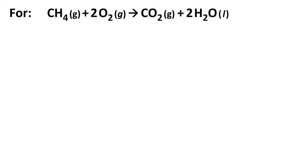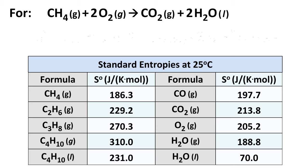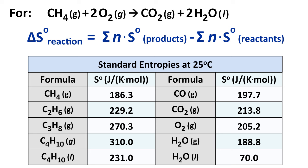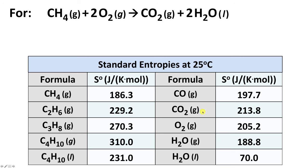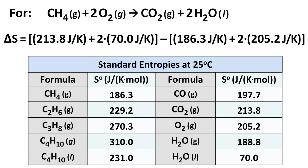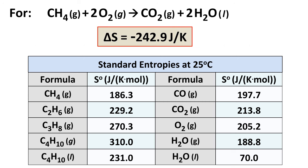To calculate delta S values from tabulated standard entropies, we use a similar formula: delta S of a reaction equals the sum of the entropy of the products minus the sum of the entropy of the reactants, multiplied by the appropriate coefficients. Note these are S values, not delta S values. For methane combustion: the CO₂ value plus twice the H₂O value, minus the CH₄ value and twice the O₂ value, works out to be negative 242.9 joules per Kelvin.